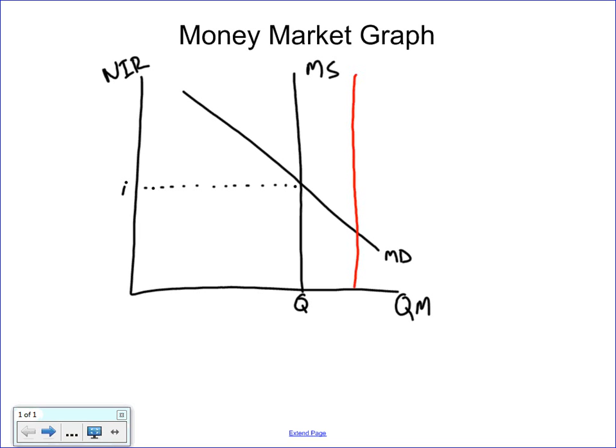So now we have money supply that's going to be this way. And the way that the Federal Reserve gets that is by buying bonds. Buying bonds will shift the curve to the right. So, buy, buying bonds. Again, if you have Eric Dodge's Five Steps to a Five book, a device he uses is buy bonds equals bigger bucks. So we're going to have more bucks in the marketplace.